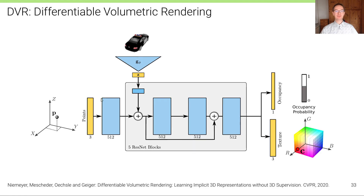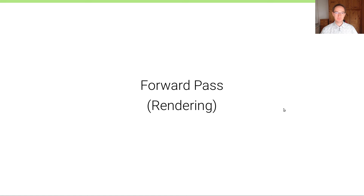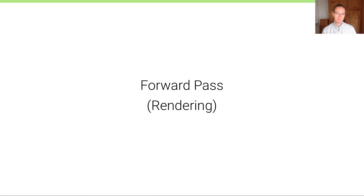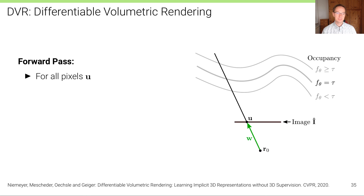How can we train this model given just RGB image observations? We have to define rendering operations — we have to render the representation into images. While differentiable rendering is commonplace for voxels, points, and meshes, for implicit representations it hadn't been done before. That is the contribution of the DVR paper at CVPR 2020. We need to define both the forward pass — the rendering — and the backward pass to backpropagate gradients through this rendering operation.